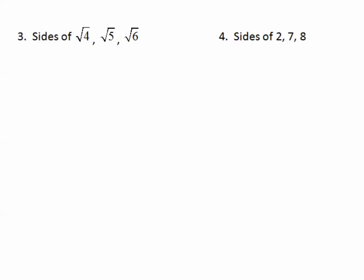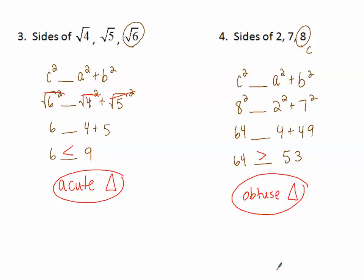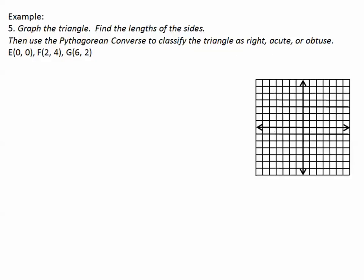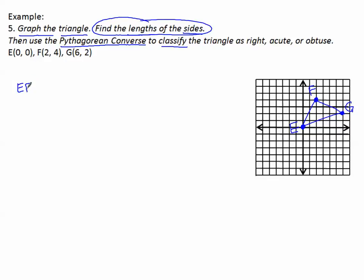Would you like to try the next two? Come back and see how you did — give it a shot and check your answers after the break. So how'd you do? Did you get them right? One more: graph the triangle, find the lengths of the sides, then use the Pythagorean converse to classify the triangle as right, acute, or obtuse. Let's start by graphing the triangle — E is at point (0, 0).